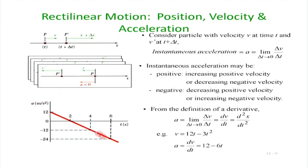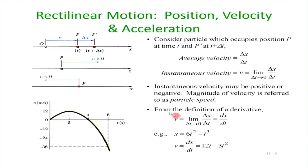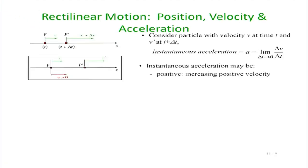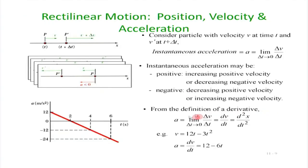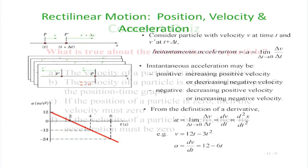If you plot acceleration as a function of time: for position x = 6t² − t³, velocity is 12t − 3t². Taking another derivative with respect to time gives acceleration. You will see that acceleration is initially positive — acting in the direction of positive x — and later as time progresses the acceleration becomes negative.